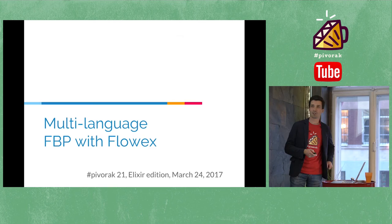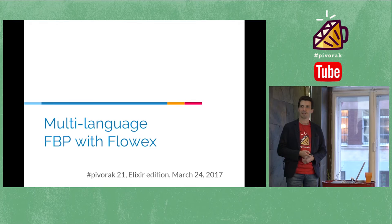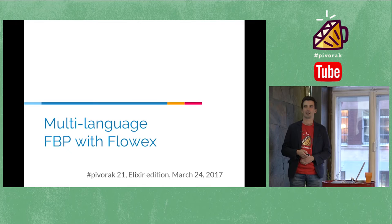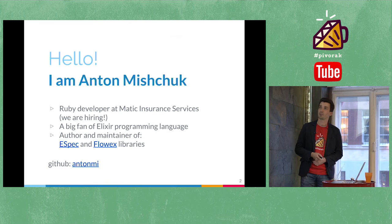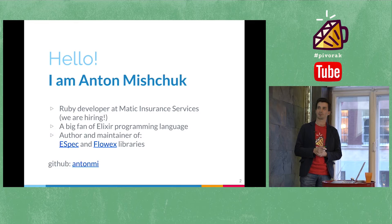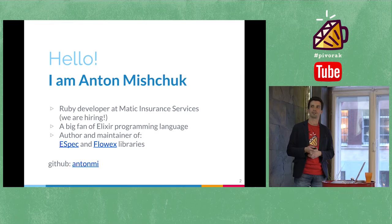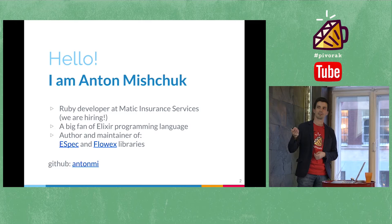Hello, ladies and gentlemen, alchemists and Rubyists, I'm happy to present my project. It's not the first presentation about Flavux — it's the second one with some additional features. My name is Anton, I am a Ruby developer at Matic Insurance Services and we are hiring. I'm a big fan of Elixir programming language and I'm known as the author and maintainer of eSpec, a behavior-driven development testing library for Elixir, and my new project, Flavux.